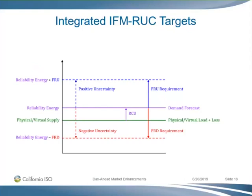By separating the products, you have the ability to handle them at different levels. Flexible ramp is a regional product; reliability capacity is a nodal product — reliability capacity is priced at the node. So you may end up having different prices between the two products. The prices will be different because they try to do different things — different targets, different requirements, different characteristics. But that doesn't mean the bid price has to be different.